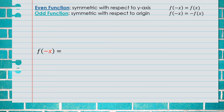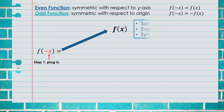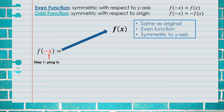We start with f(-x) — your first step is to simply plug negative x into the function. Once you have plugged it in, analyze the result. The first possibility is that when you plug in negative x, the result looks just like the original. If so, that tells you this is an even function, and it must be symmetric to the y-axis.